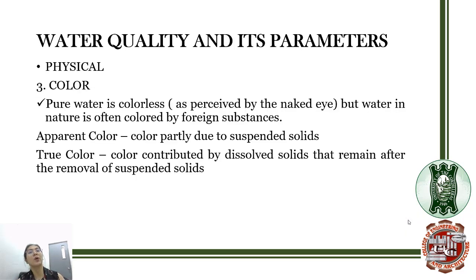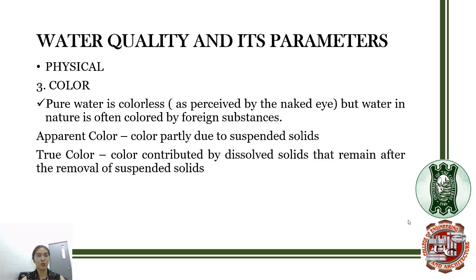Another physical water quality parameter is color. Pure water is colorless as perceived by the naked eye, but water in nature is often colored by foreign substances. There are two types: apparent color, which is partly due to suspended solids, and true color, which is contributed by dissolved solids that remain after the removal of suspended solids.